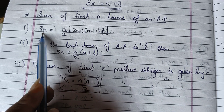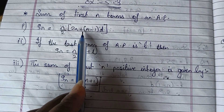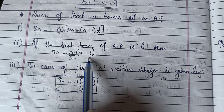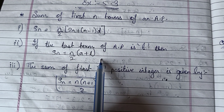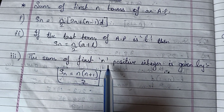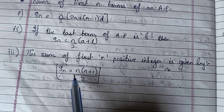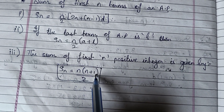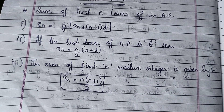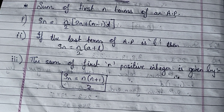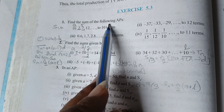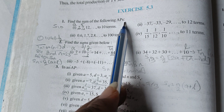The most important formula is Sn = n/2 × (2A + (n−1)D). If the last term is known, use Sn = n/2 × (A + L). The sum of first n positive integers uses n(n+1)/2. Now starting with Exercise 5.3, Question 1 — find the sum of the following APs.